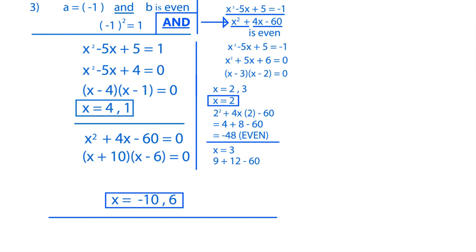So this is 9 plus 12 minus 60, which is 21 minus 60, which is minus 39, which is an odd number. So x equals 3 is not a solution.